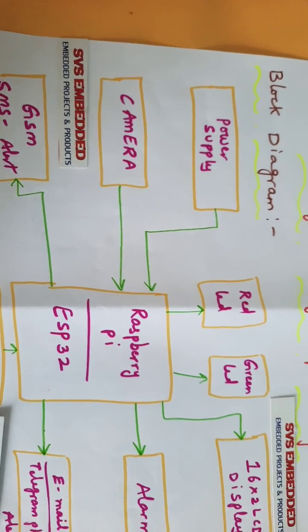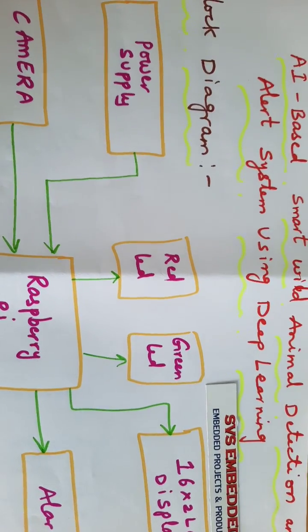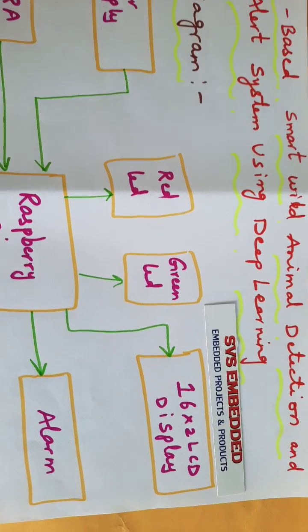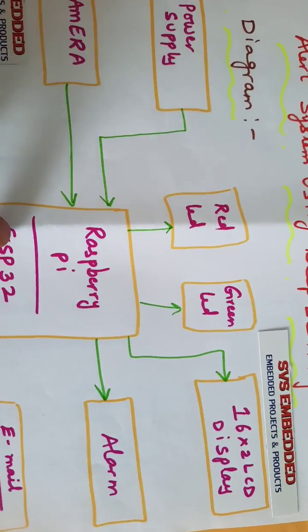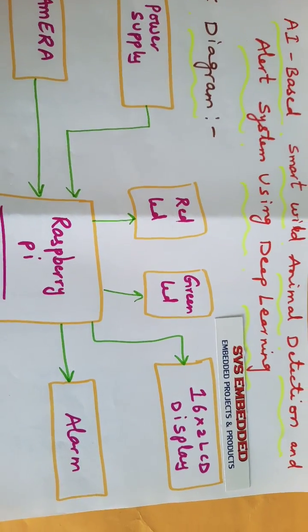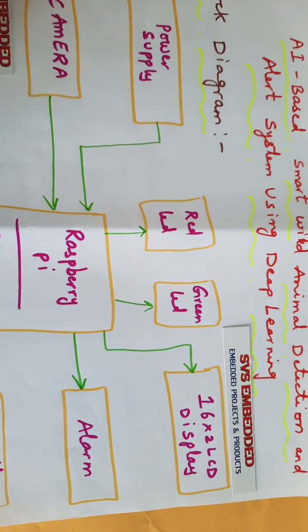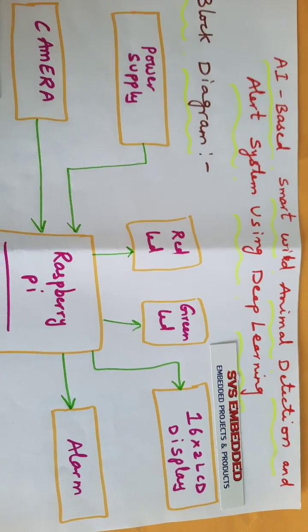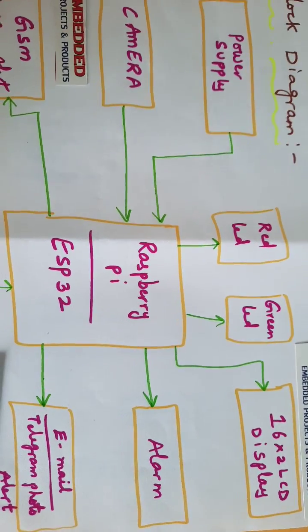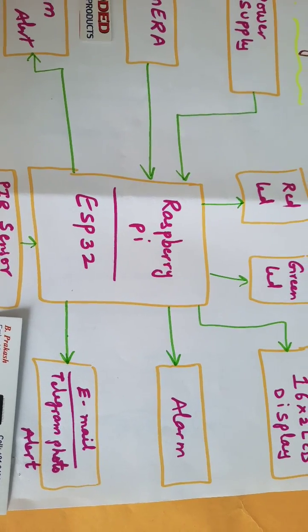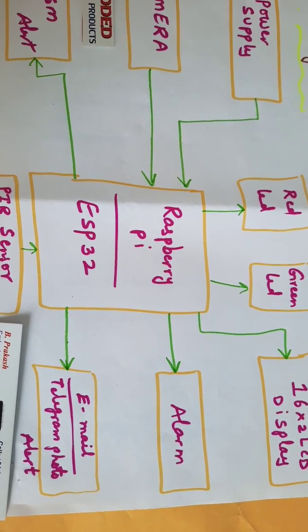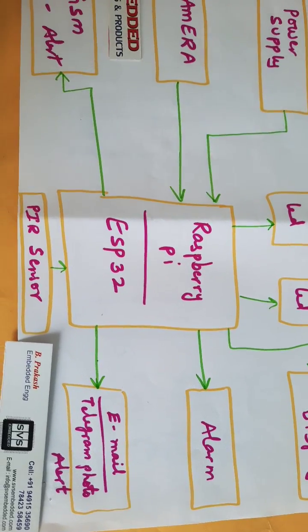One red LED and one green LED, and one 16x2 LCD character display. Whatever process is going on should be displayed on the LCD because we are checking the IP address and that IP address we can see on our mobile phone. One alarm and one email alert - we have to provide the email. Telegram photo alert. PIR camera for any motion detection.